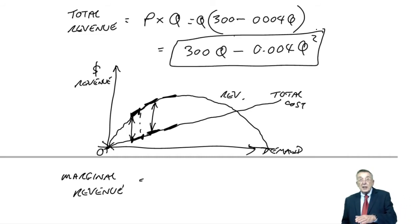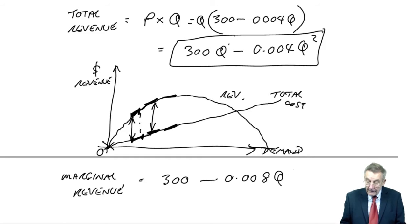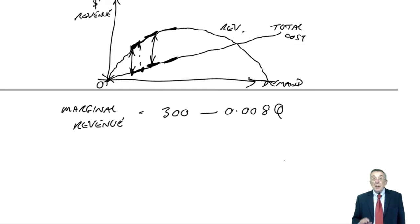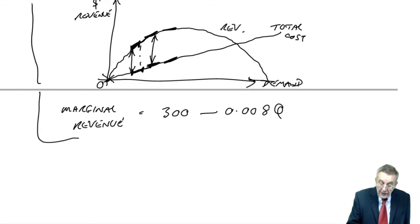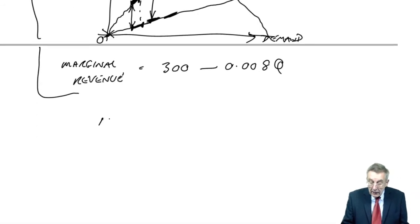And 300Q, you multiply by the power and drop the power by one, it differentiates to 300 minus, multiply by the power, so 2 times 0.004 is 0.008. Drop the power by one Q. Now, if that frightens you, don't worry. I told you why I was doing this.